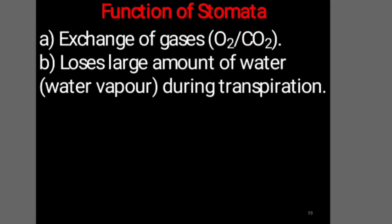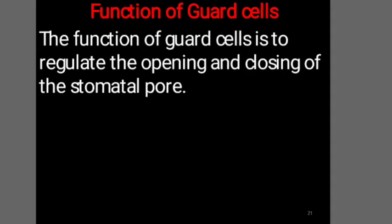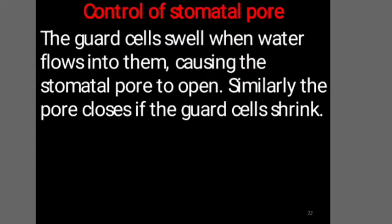What are the functions of stomata? They are exchange of gases like oxygen and carbon dioxide, and a process called transpiration, where plants lose large amounts of water in the form of water vapor. In stomata you can see bean-shaped cells called guard cells. The function of guard cells is to regulate the opening and closing of the stomatal pore. The guard cells swell and water flows into them, causing the stomatal pore to open. Similarly, the pore closes if guard cells shrink.